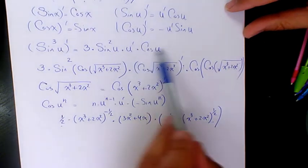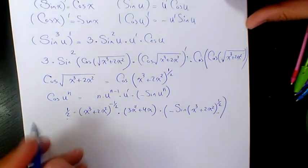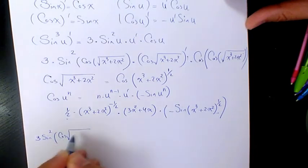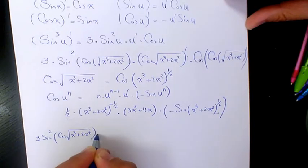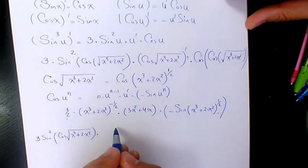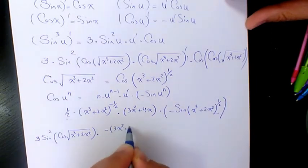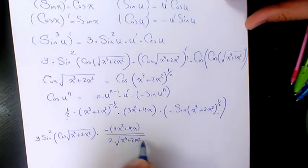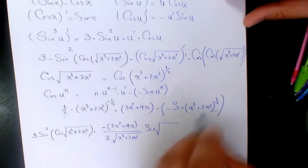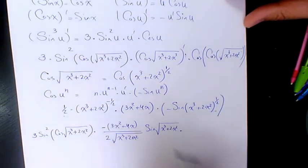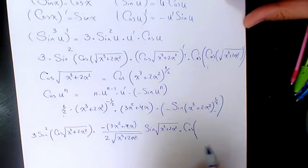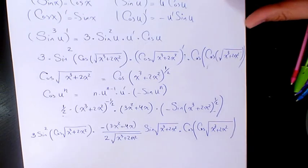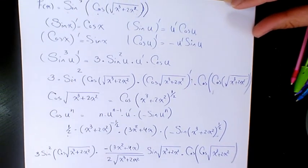So if I write the whole thing from the beginning, it's going to be three sine squared of cosine of square root of x cubed plus two x squared, times negative (three x squared plus four x) over two times the square root of x cubed plus two x squared, times cosine of cosine of square root of x cubed plus two x squared.